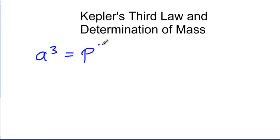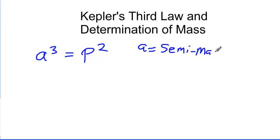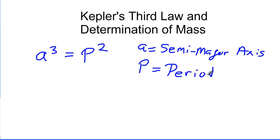Kepler's third law states that a cubed equals p squared. This is a simplified version of the law. A is the semi-major axis of the orbit, and P is the period. Those are two numbers that are relatively easy to measure for different objects. We can usually determine the period of an object — how long it takes one object to orbit another, such as the Earth orbiting the Sun, the Sun orbiting the center of the galaxy, or binary stars in other planetary systems.